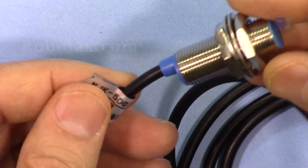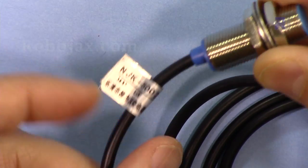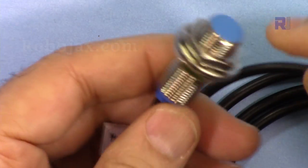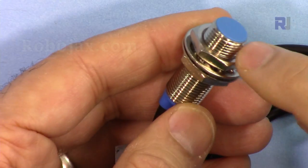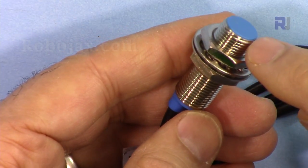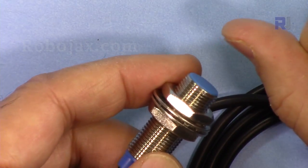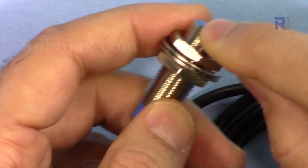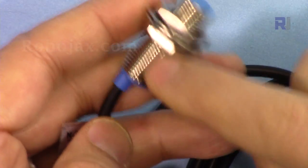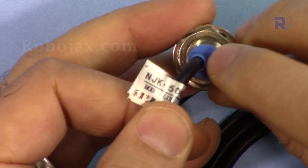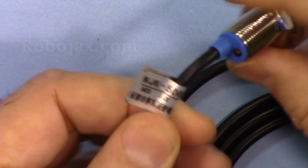This is the Hall sensor, model number NJK-5002C. Finally we are getting something from eBay and AliExpress that has a model number. Internally this has a Hall sensor. The job of the Hall sensor is to detect magnetic field. When a magnet is close to this it detects it and will send a low signal. This also has a light here when it detects.